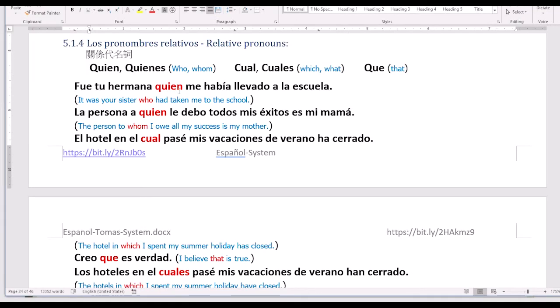First of all, we are talking about the pronouns of relative - the relative pronouns. The relative pronouns are used to define who, or which, or what we are doing with the sentence. Let's go to the first example. ¿Es tu hermana, quien me lleva a la escuela? Is that your sister who has taken me to the school? Quien means who.